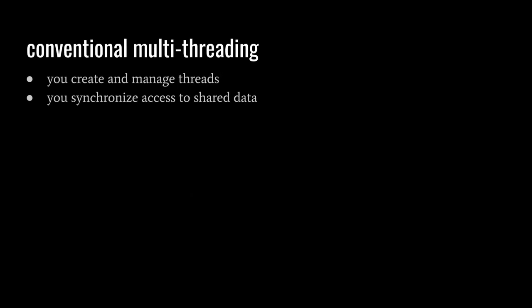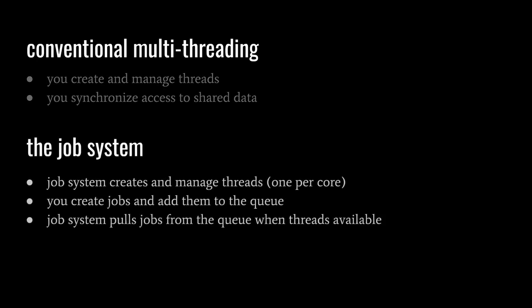Let's look at the job system. Without it, multi-threading requires us to create and manage threads ourselves, as well as to manually synchronize access to shared data. When using the job system, it creates and manages a pool of threads for us, usually one per CPU core. We then create units of work called jobs and add them to the job system queue. The system farms these jobs to the thread pool as threads become available. Jobs are intended only for doing computation on in-memory data — not I/O work, since a thread would be wastefully idle while waiting.